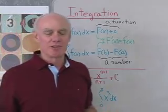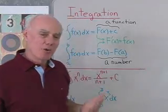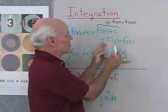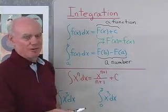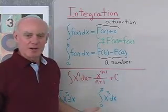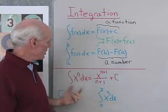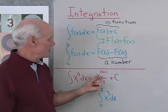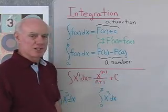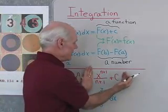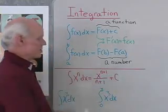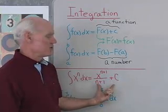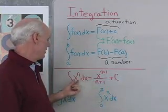They have really two different definitions even though the notation is the same. What they have in common is that whatever we get for this function, its derivative has to be the function we started with. Now, we only have a couple of formulas to start with. The integral of x to the n dx is going to be x to the n plus 1 over n plus 1 plus c, because if I take this and differentiate it, I end up with x to the nth. I put the c on here so that I get all functions that are the antiderivative.